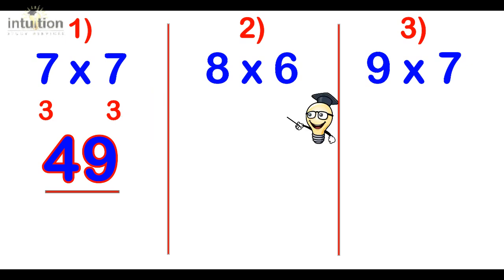Number 2, 8 times 6. So 8 is 2 away from 10 and 6 is 4 away from 10. Then we do 8 take away 4 which is 4, which is the same as 6 take away 2, that also gives us 4. And then we do 2 times 4 which is 8. So the answer is 48.